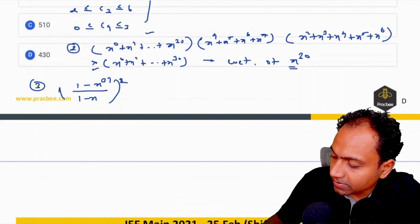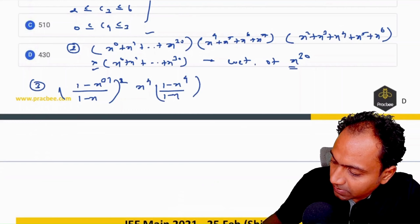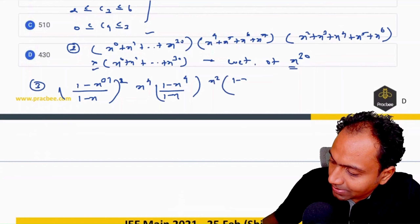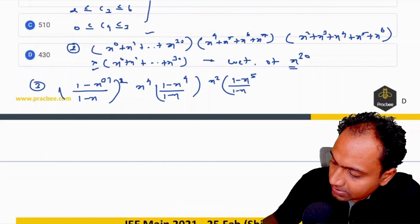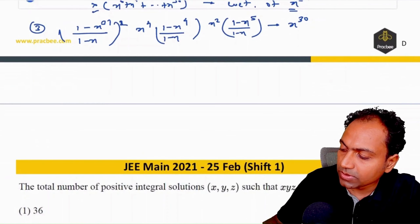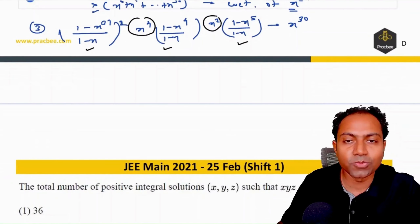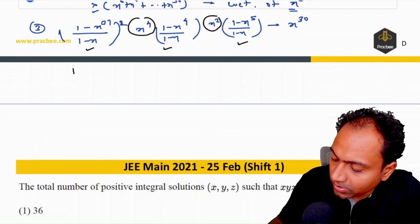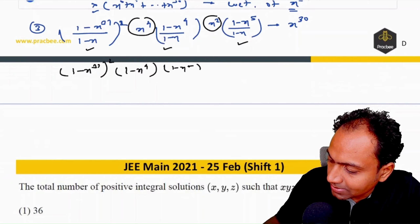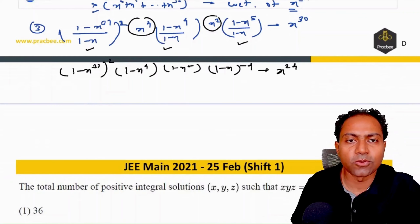We want the coefficient of x³⁰ in the combined expression. Since x⁴ and x² are already accounted for from C2 and C3, the remaining terms must contribute x²⁴. So we need the coefficient of x²⁴ in (1−x³¹)² × (1−x⁴) × (1−x⁵) × (1−x)⁻⁴.